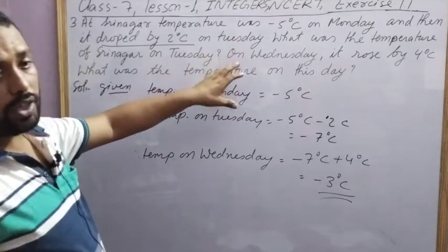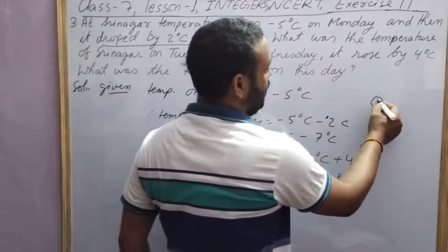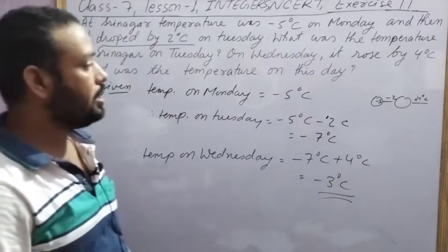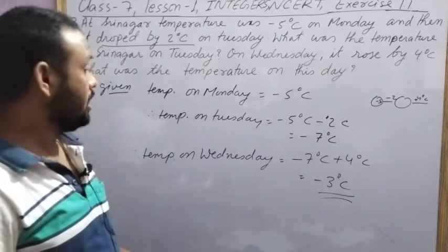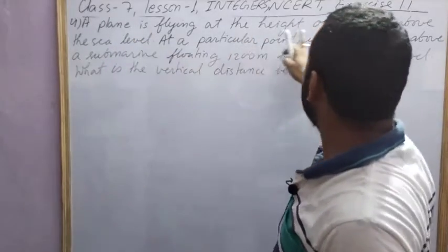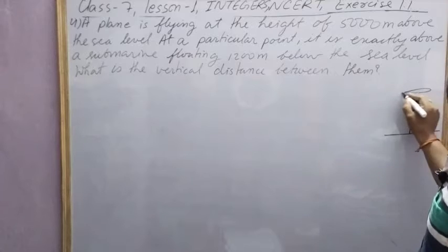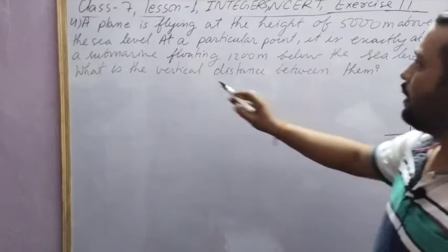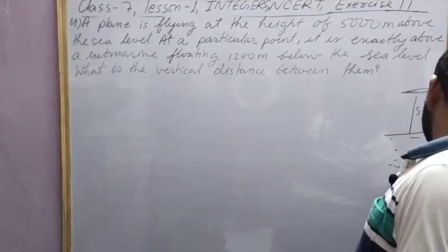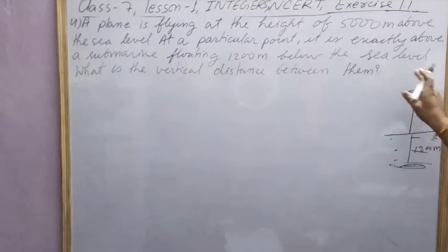Question Number 4 says: A plane is flying at the height of 5000 meters above the sea level. A plane is flying 5000 meters above the sea level. At a particular point, it is exactly above a submarine which is floating 1200 meters below the sea level.